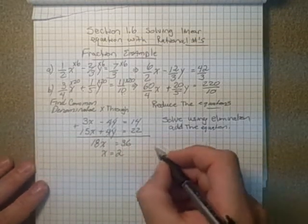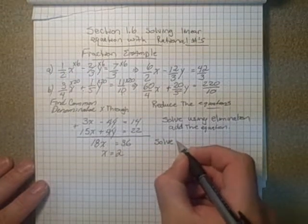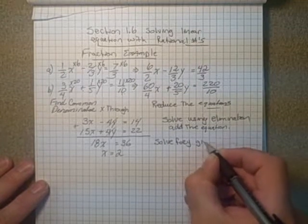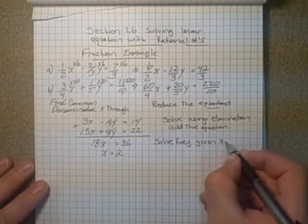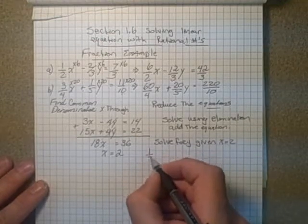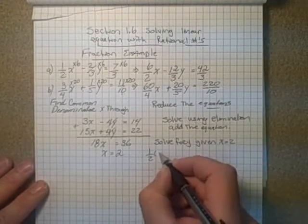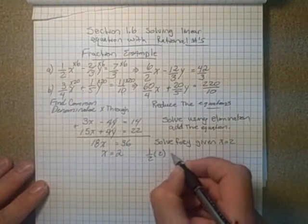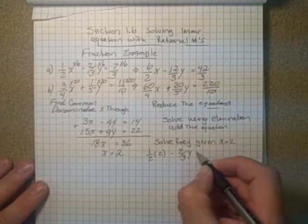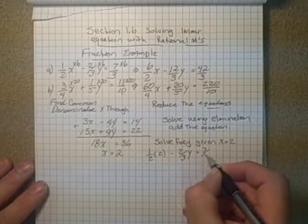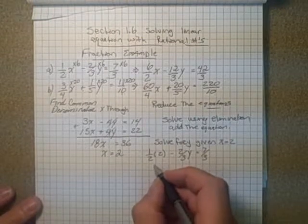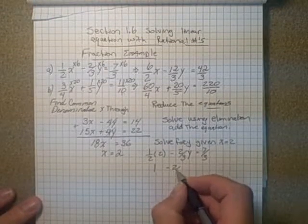So then we would solve for y, given that we know x is equal to 2. So we could choose one of those original equations, so one-half of x, which is 2, minus two-thirds y, unknown, is equal to seven-thirds. To work it through, 2 times 1 is 2 over 2, which is 1, minus two-thirds y equals seven-thirds.